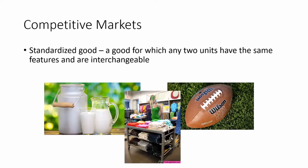Standardized goods are goods for which any two units have the same features and are interchangeable — things like milk, footballs, basketballs, baseballs, and clothing. If you're at Kroger looking at gallons of milk, you might choose between whole milk, 2% milk, or skim milk, but all the 2% milks are essentially the same — there's no real way to tell the difference. If you think about clothes, you might be willing to pay more for a shirt from American Eagle than from Old Navy, but they are interchangeable goods. They're both shirts.